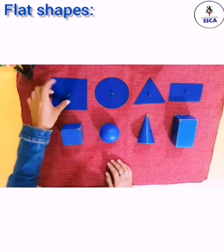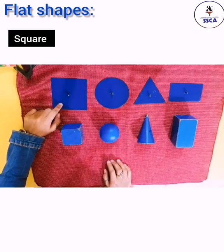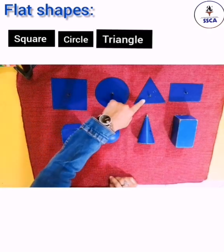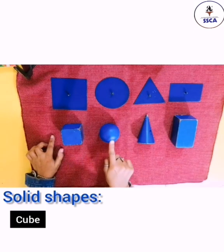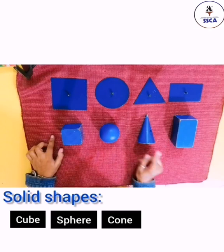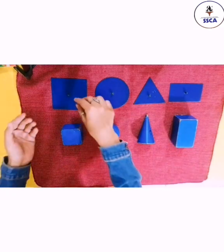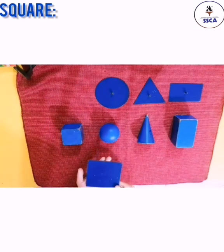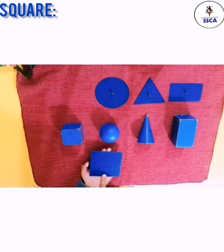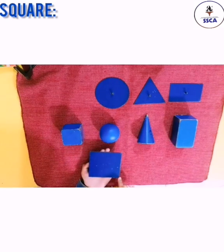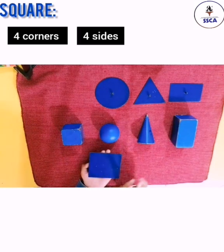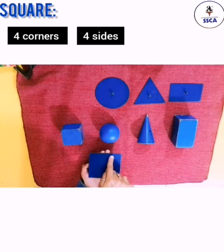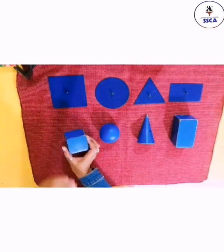Let's look at flat shapes first. The flat shapes are: square, circle, triangle, and rectangle. Now, what is a square? It is a flat shape. It has four corners and four sides, and all four sides are equal.